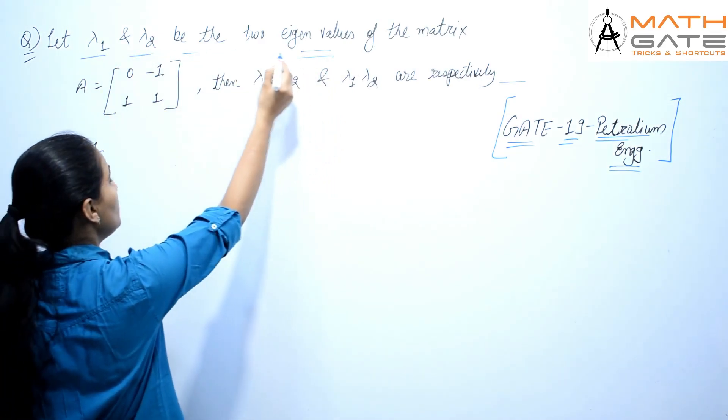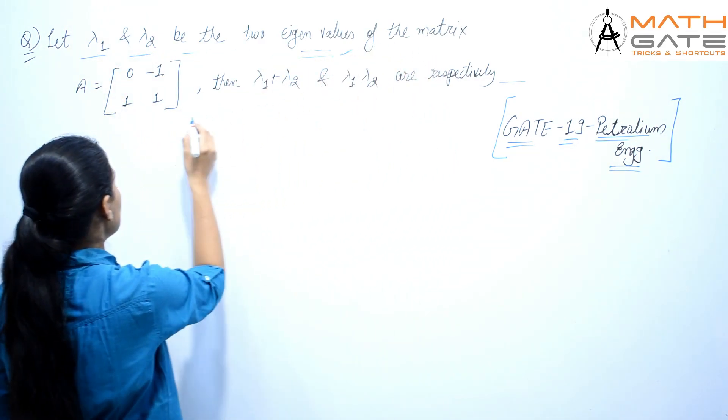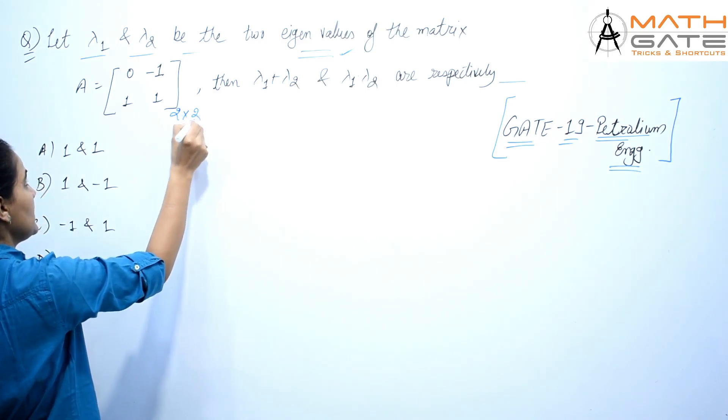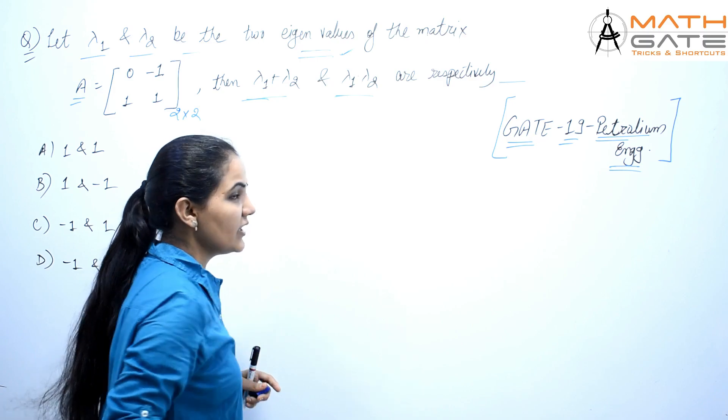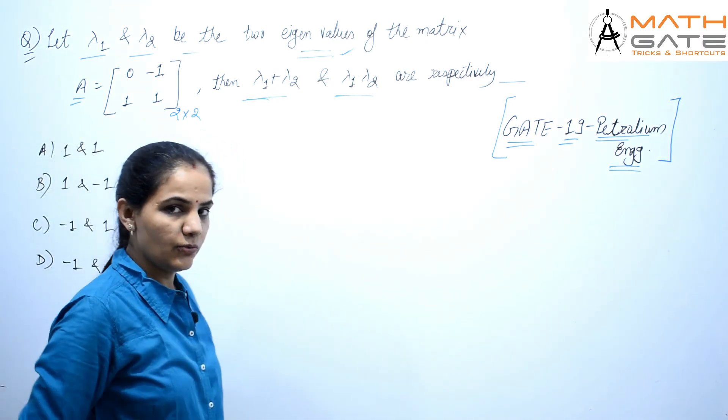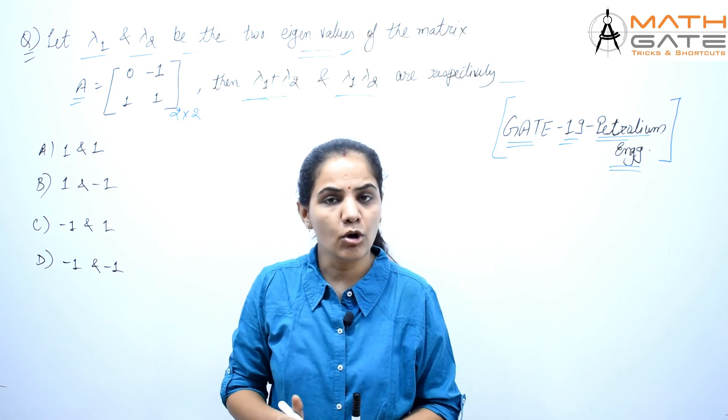The question is: let lambda 1 and lambda 2 be the two eigenvalues of the matrix A, a 2×2 matrix. Then lambda 1 plus lambda 2 and lambda 1 times lambda 2 are respectively what? We have four options as well.